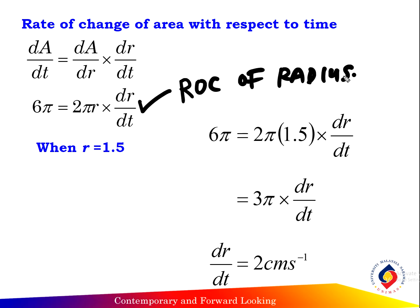When the radius equals 1.5 cm, substitute into dA over dr: 2 pi times the radius gives 2 pi times 1.5. So dA over dr equals 3 pi times dr over dt, and the rate of increase of the radius equals 2 cm per second.